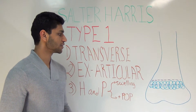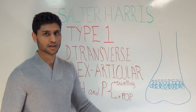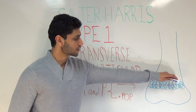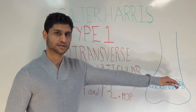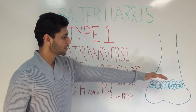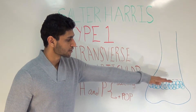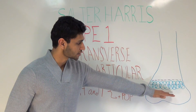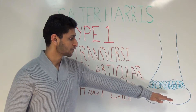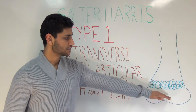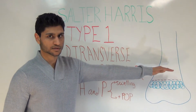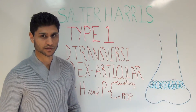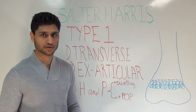A type 1 is a transverse fracture that can either go just above the growth plate or right through the physis. What will end up happening is that the entire growth plate or part of it will end up being displaced from the metaphysis. The epiphysis is not injured, nor is the metaphysis — it's just a separation. These tend to be non-displaced and extra-articular.